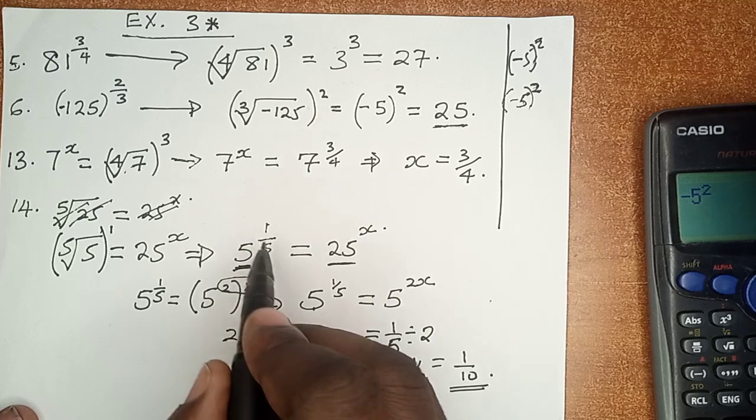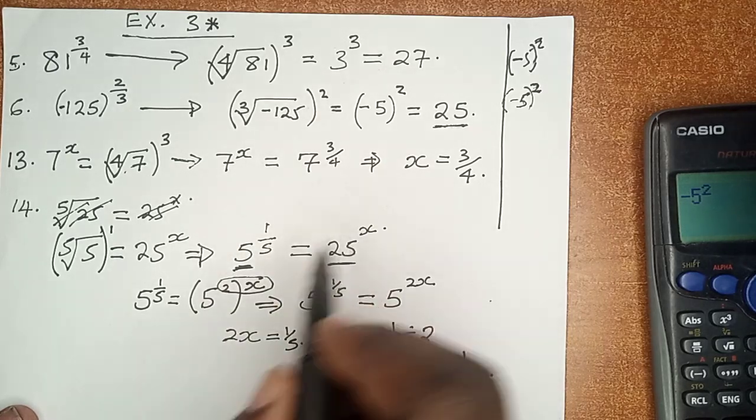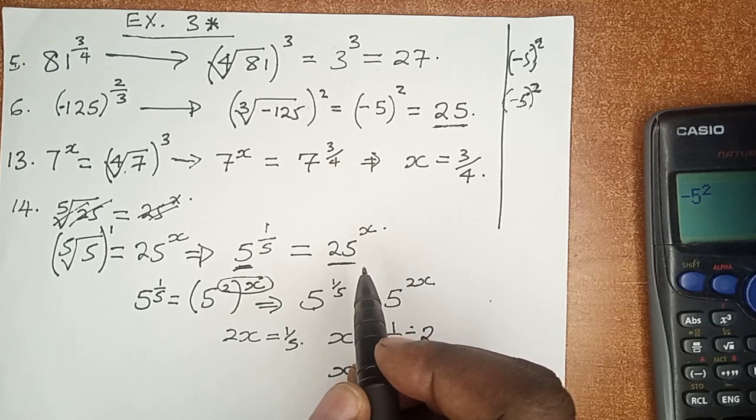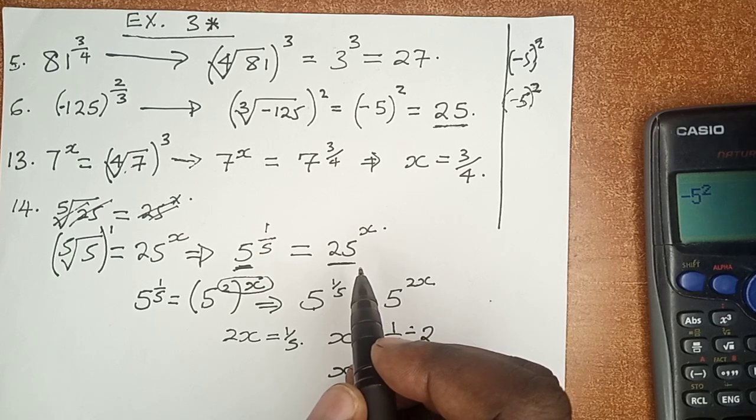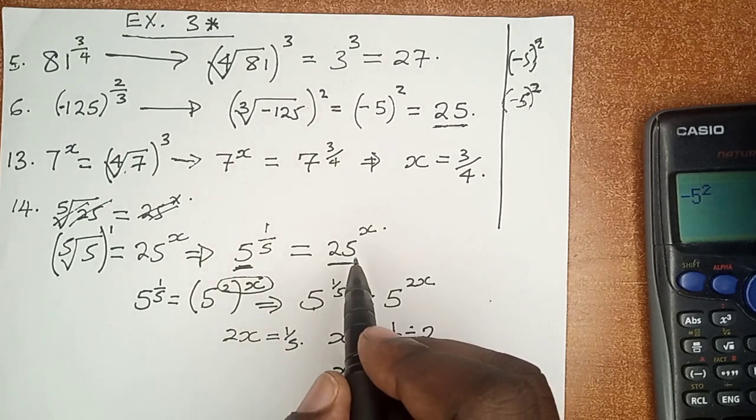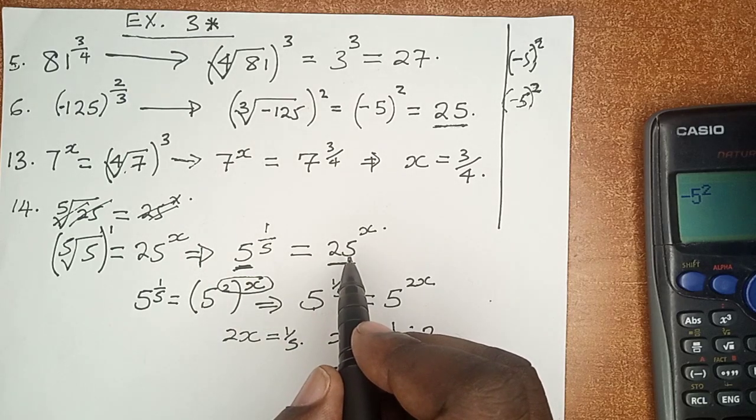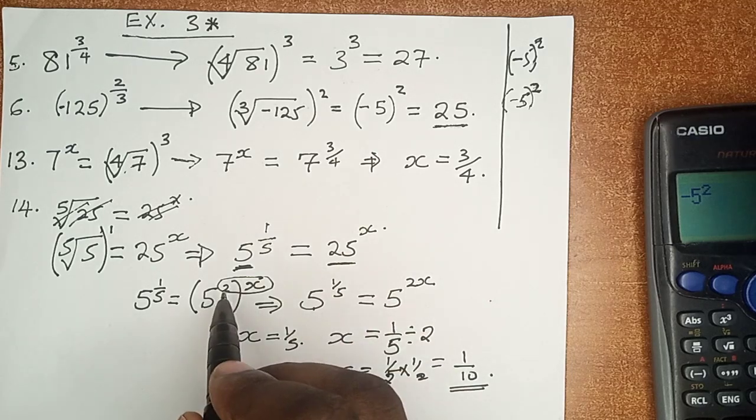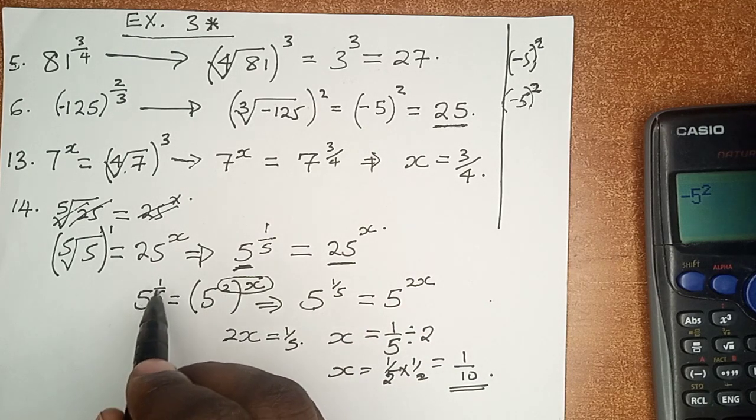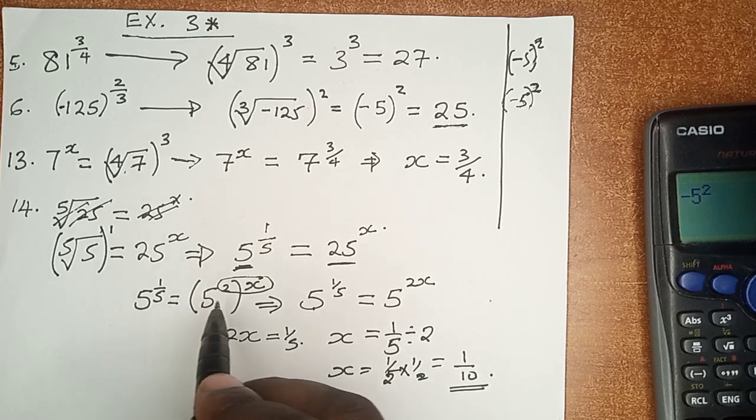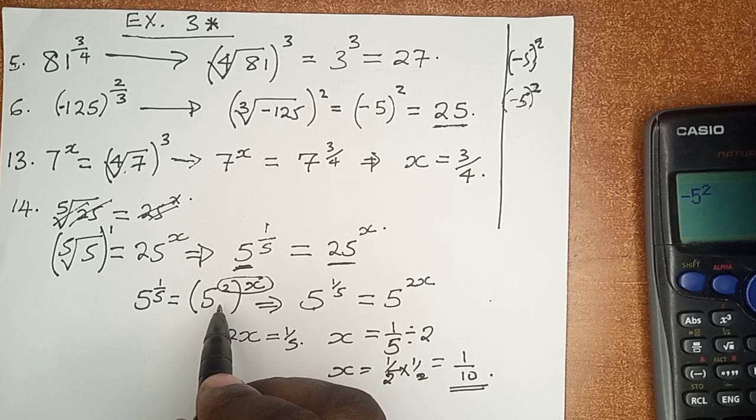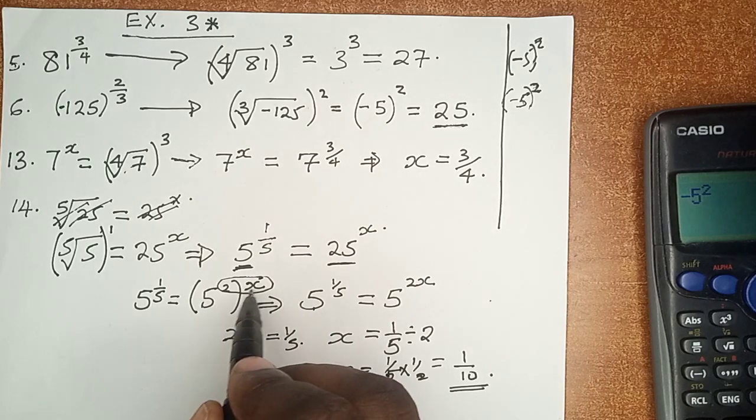But another problem arises. Now the two sides are equal, but the bases are not equal. So how do we make the bases equal? We have to write 25 in terms of 5. We realize that 25 by itself is actually 5 squared. And therefore, the left-hand side gives us 5 raised to power 1 over 5 is equals to 5 squared, which is itself 25. And it is this 25 that has to be raised by power x.